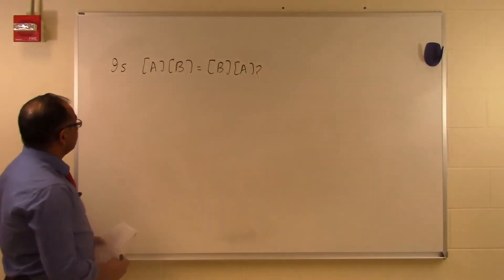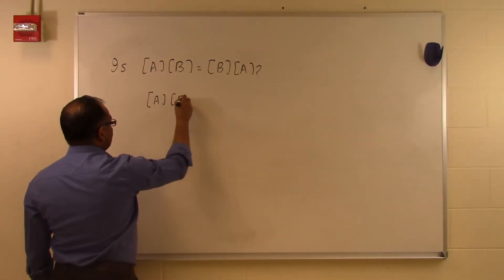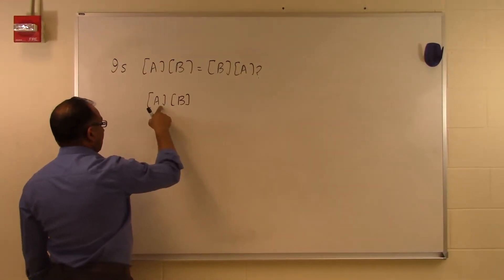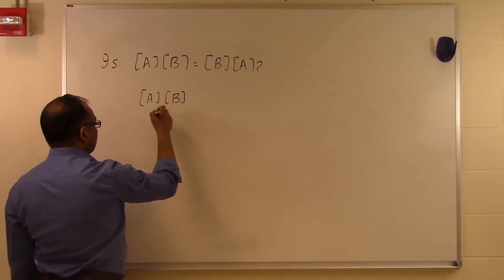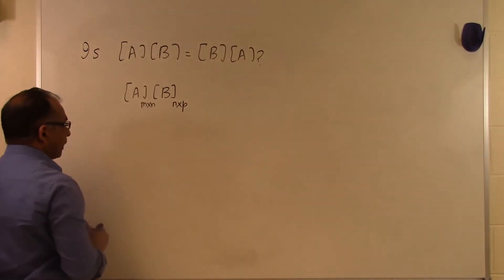The first thing you have to understand is that if A times B is possible, then the number of columns of A has to be the same as the number of rows of B. So let's suppose this is M by N and this is N by P, yes A times B is possible.